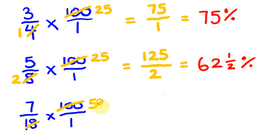There's no apparent number that goes into both the top and the bottom here, so now we just multiply these across. 7 times 50 is 350, and we're going to place this over 9 times 1, which is 9.